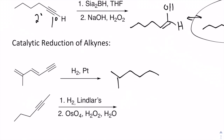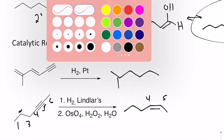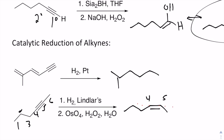H2 with Lindlar's catalyst selectively reduces the alkyne to the Z alkene. The six-carbon starting material gives a six-carbon product with a Z double bond. We know it's Z because if we draw a dashed line through the double bond, the highest priority groups are on the same side — a carbon chain on each carbon, with the longer chains on the same face.